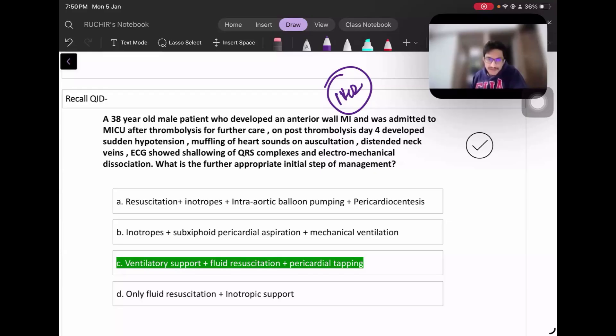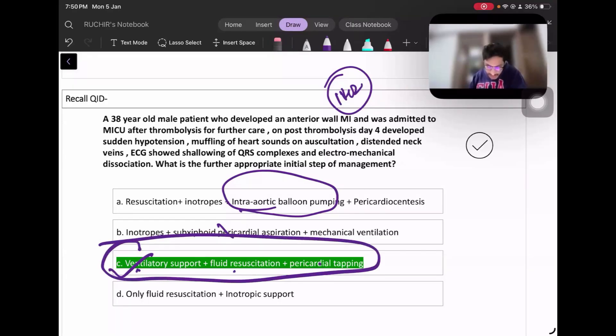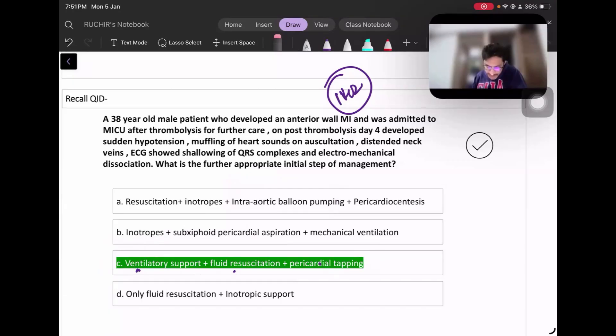Amongst the options, the best answer would be to give fluid resuscitation, pericardial tapping, and ventilator support. You don't need intra-aortic balloon pumping directly. Inotropes are not directly required initially. You give ventilatory support, fluid resuscitation, and immediate pericardial tapping. The best answer is ventilator support, fluid resuscitation, and pericardial tapping. Any issues in the question stem or options?